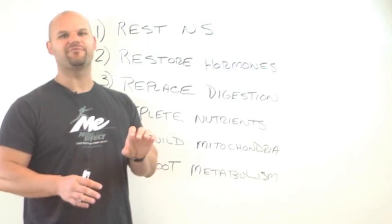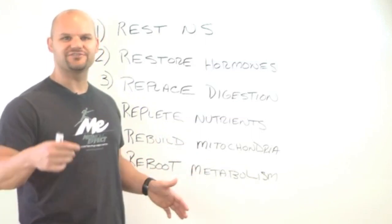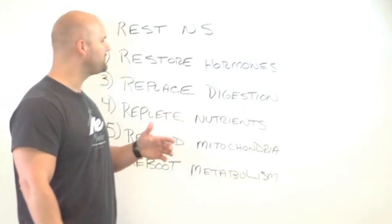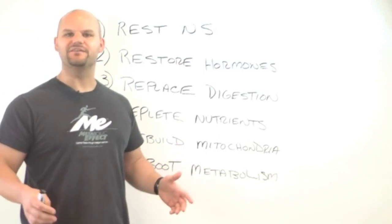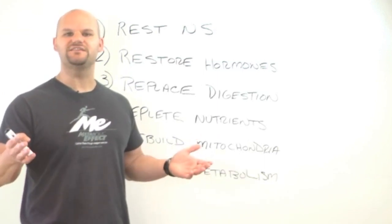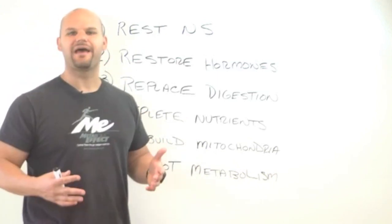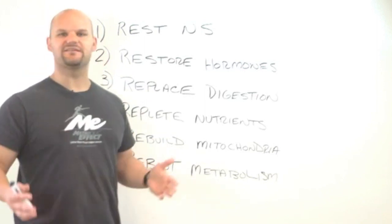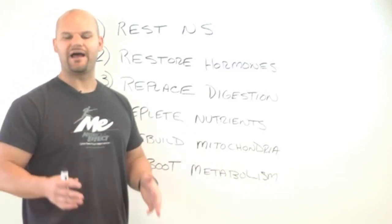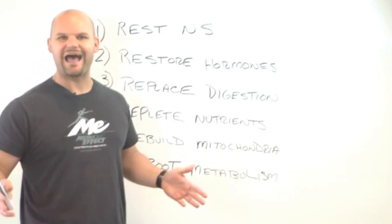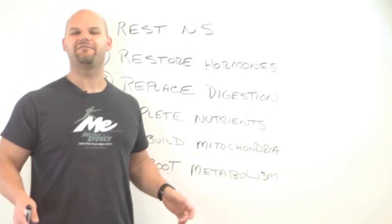The first thing we need to do, and perhaps the most difficult thing for those of you who have been chronic exercisers and extreme dieters, is this first piece, which is rest the nervous system. Remember, this happened because of that nervous system seesaw, the sympathetic overdrive that threw the entire system out of balance. If we cannot rest the sympathetic nervous system, if we do not stop the incessant overdrive of the sympathetic nervous system, we cannot get the metabolic system back online.